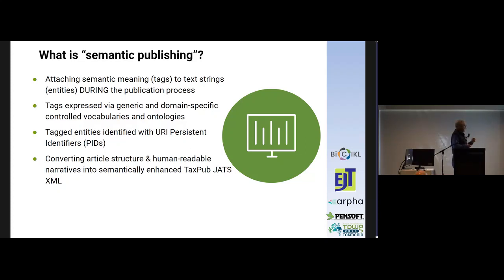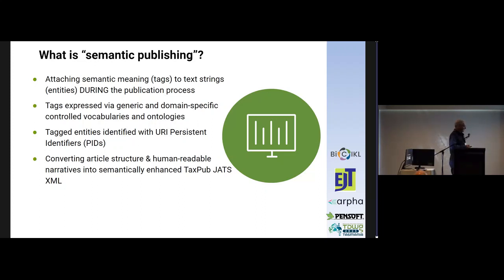All tagged entities should be identified with persistent identifiers, which will actually identify the use of that term at that specific place of that specific publication — like an instance of usage of something. Semantic tagging also allows to convert the entire article into not only human-readable but also machine-actionable text. Pensoft has developed a special standard for that called TaxPub, which is an extension of the JATS XML standard, a very well-known standard for journals and journal articles.